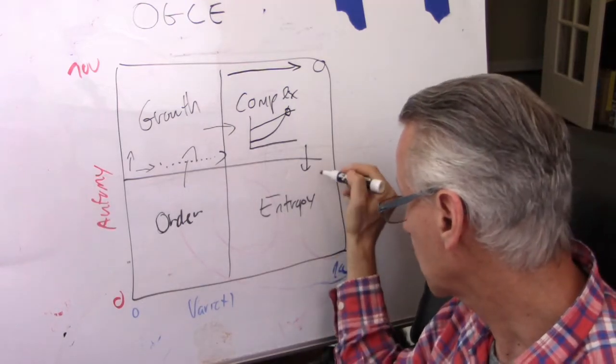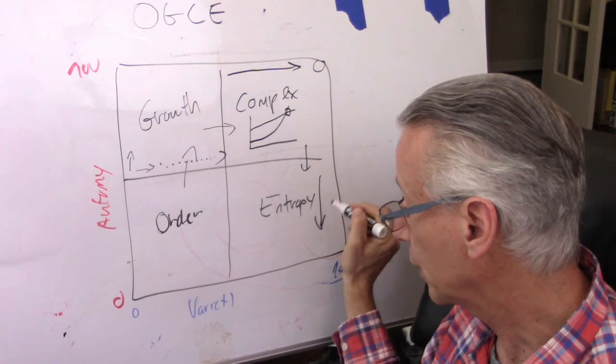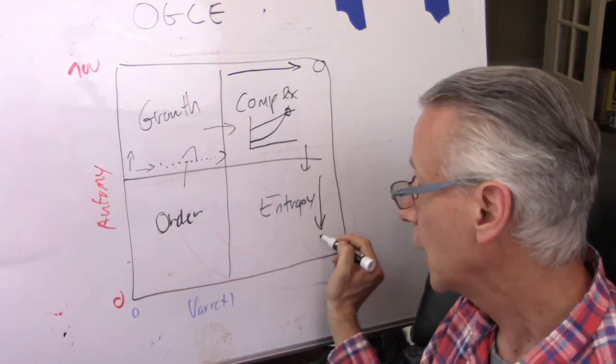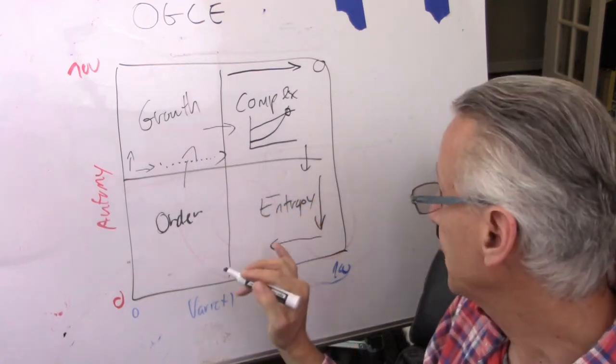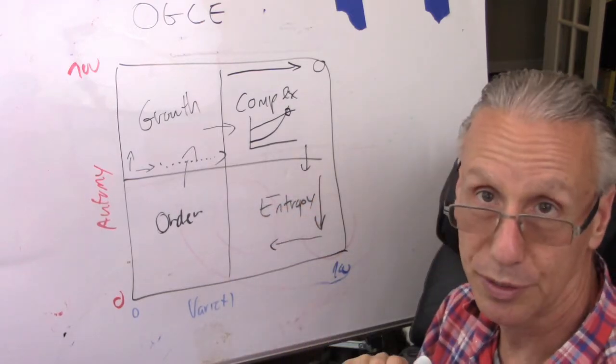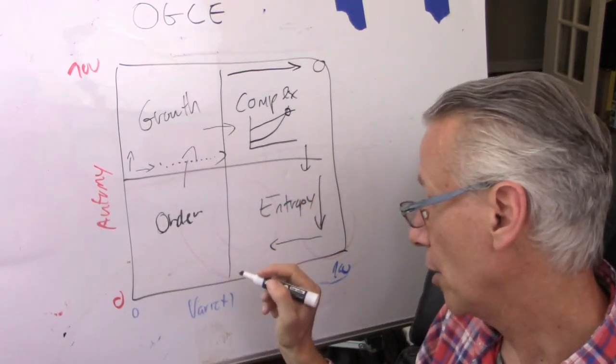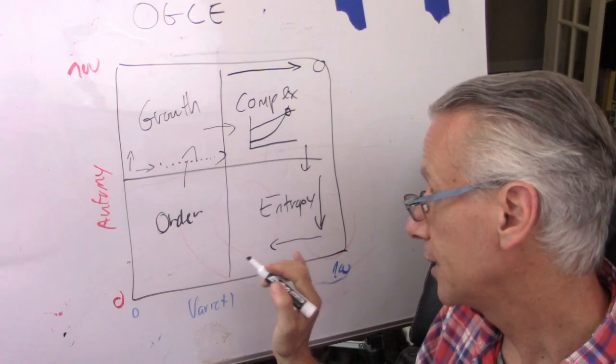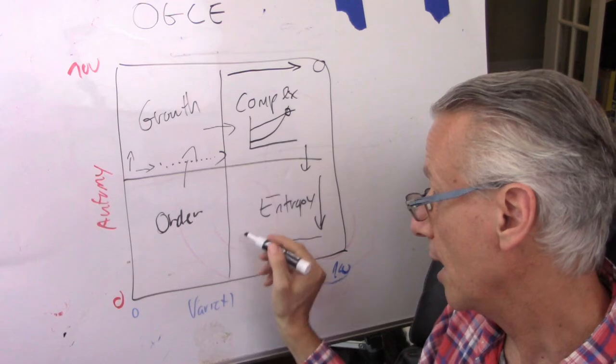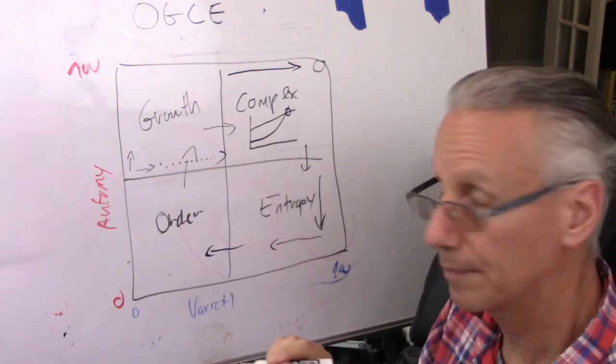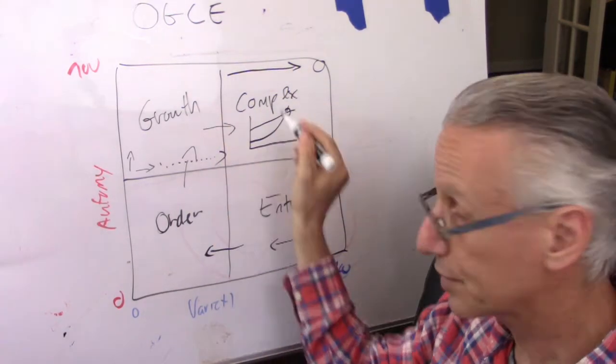And as variety decreases, I have two options. I can be in a state where I have enough resources again to manage what I have, and I'm going back to order. And then I can go through this cycle again and again.